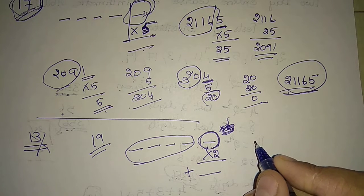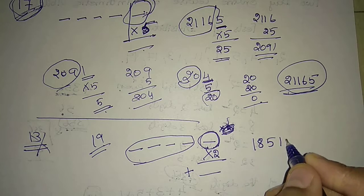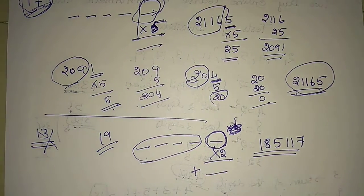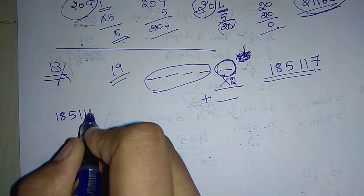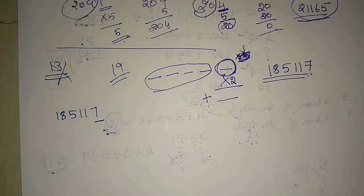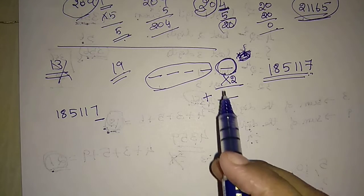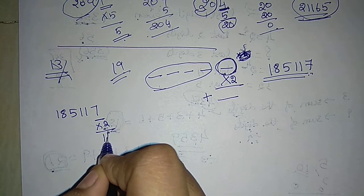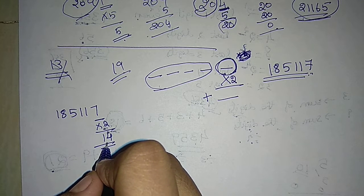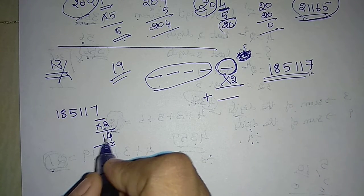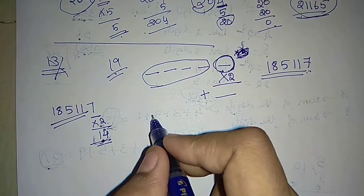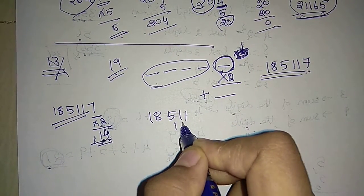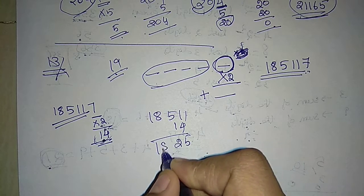For example, take the number 185117 — 6 digits are there. Here the last digit is 7. So we have to multiply this 7 by 2 — answer is 14. Then, unlike divisibility by 7 where we subtract, for 19 we add this number to the remaining digits. The answer becomes 18525.